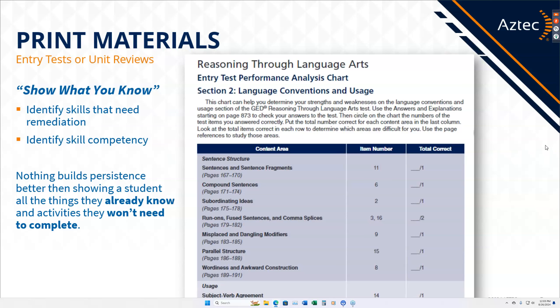Not only do you get a score that says this is what you're supposed to be working on, but it's going to tell you very specifically. So instead of saying, oh, your math score is a little low, you need to keep working, it's going to give you explicitly what they need to work on. You can see here — this is an entry test performance analysis chart for the Reasoning Through Language Arts practice test in our big book for GED — and it has very explicit page numbers as to exactly what that student needs to work on.